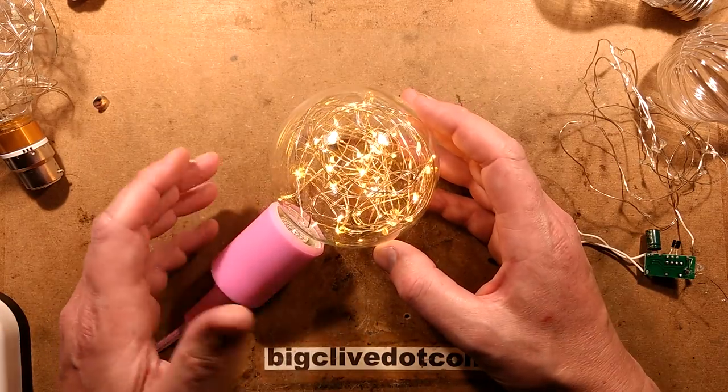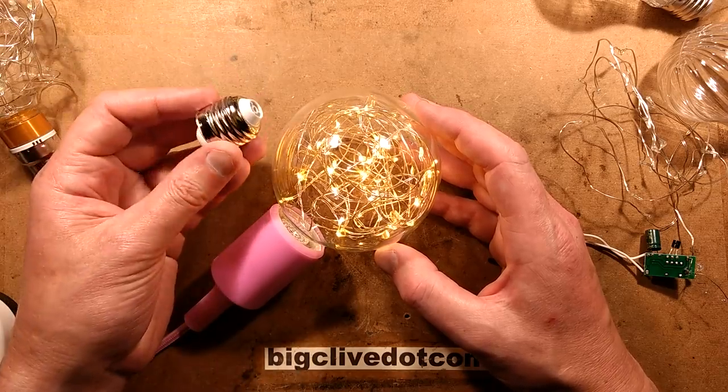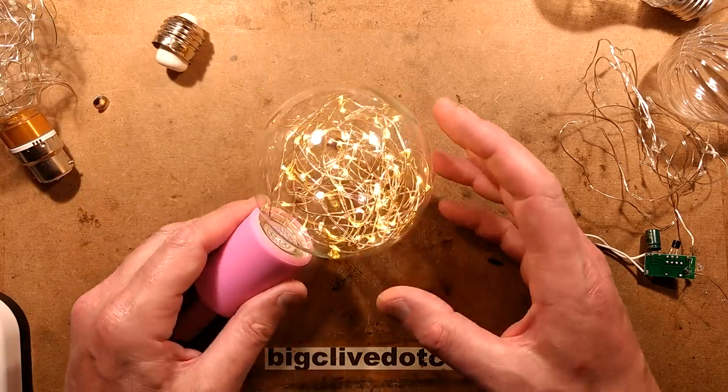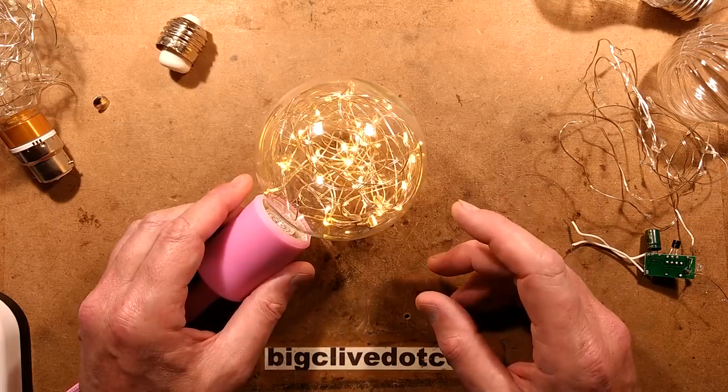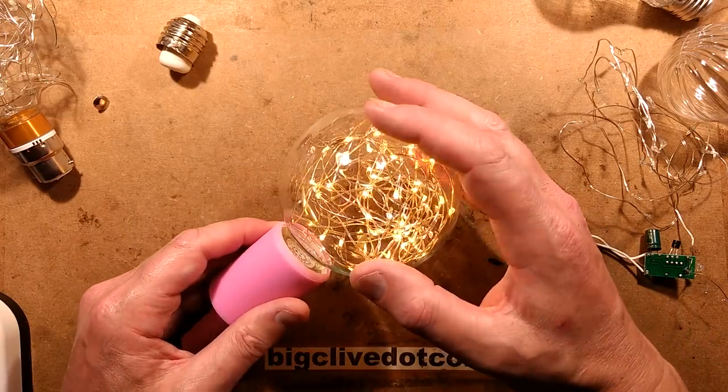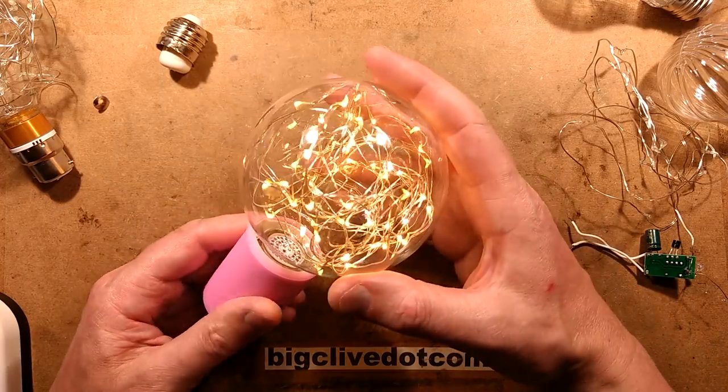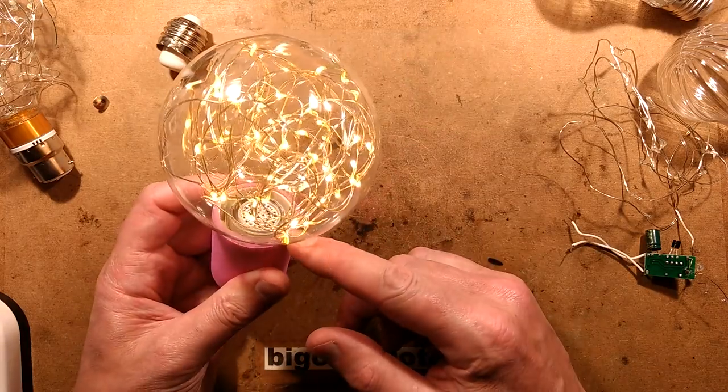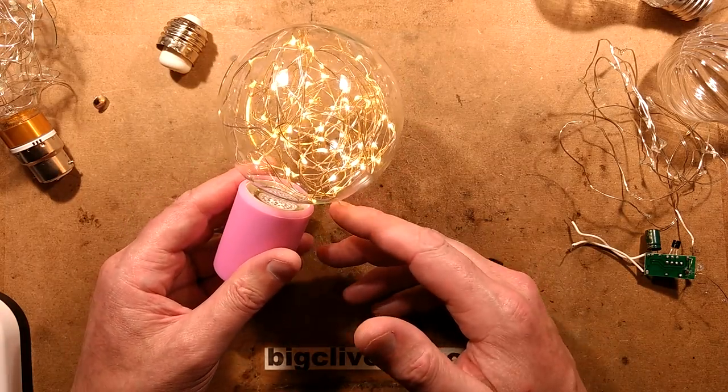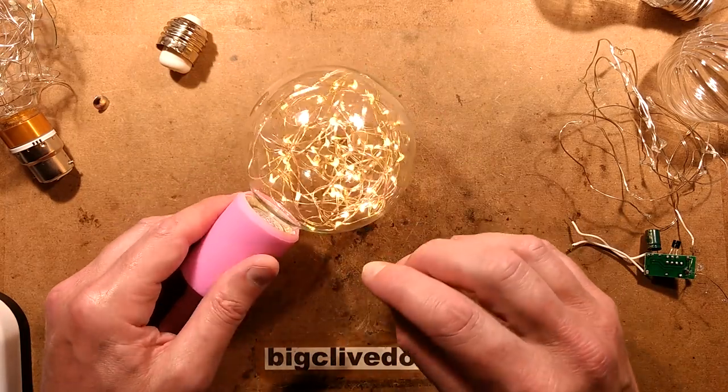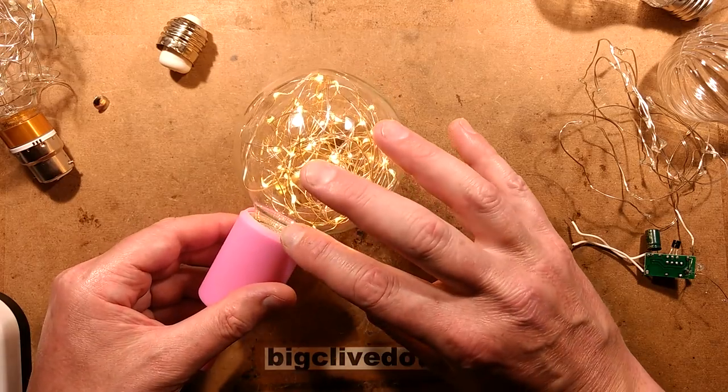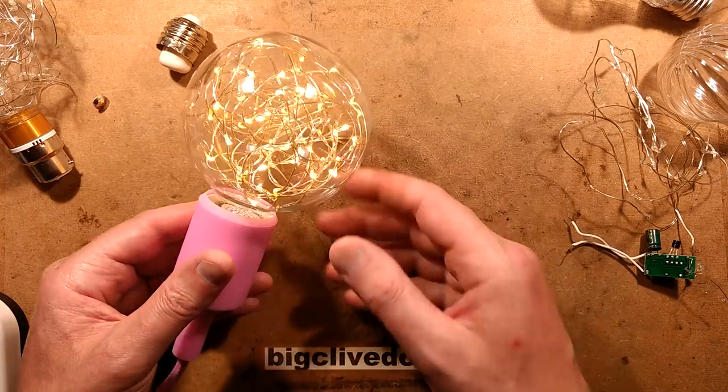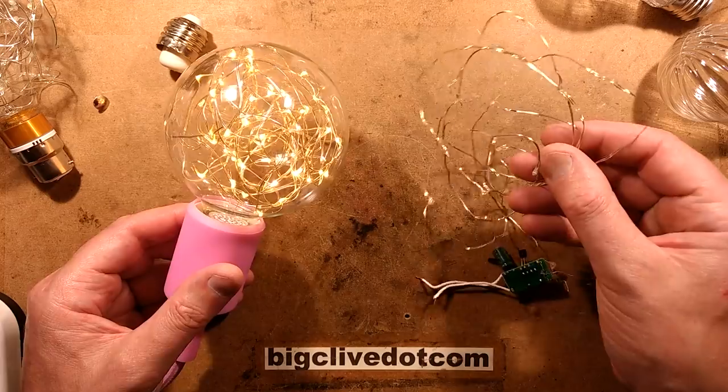If you do a search for Starry and E27 for the base, you'll find various types but they also go under other names. The idea of these is simple - it's a glass globe with an electronic power supply in the bottom. It looks like it's designed for a 1 watt LED, but instead of having a 1 watt LED, it's got a large string of the copper wire LEDs attached to it. It's just a parallel array of LEDs that give it a very 3D look and they've just stuffed them in.